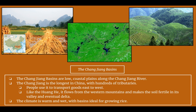The Changjiang basins are low coastal plains along the Changjiang river, southwest of the North China plains. The Changjiang is the longest river in China, with hundreds of tributaries branching out from the main river. People use it to transport goods from east to west. Like the Huanghe, it flows from the western mountains and makes the soil fertile in its valley along its path and in its eventual delta. The climate in the Changjiang basins is warm and wet, with the basins ideal for growing rice.